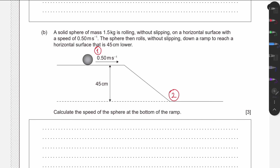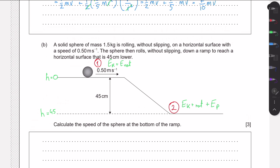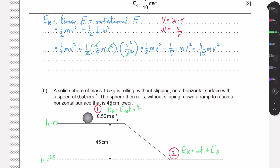At the first point the sphere only has kinetic and rotational energy. At the second point it also has kinetic and rotational energy, but we must account for the change in potential energy. If we set height zero at the top, the sphere gains potential energy as it descends. With h = 0 at the top, the bottom is at a height of negative 45 cm — equivalently the sphere loses 45 cm of height — so we account for mgh with h = 0.45 m.